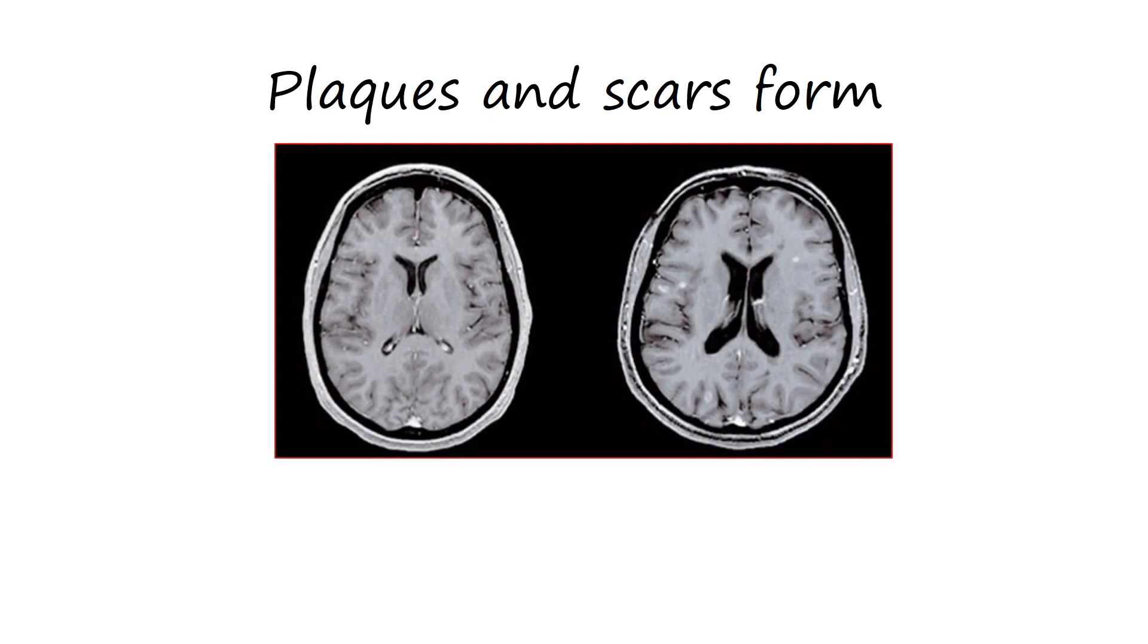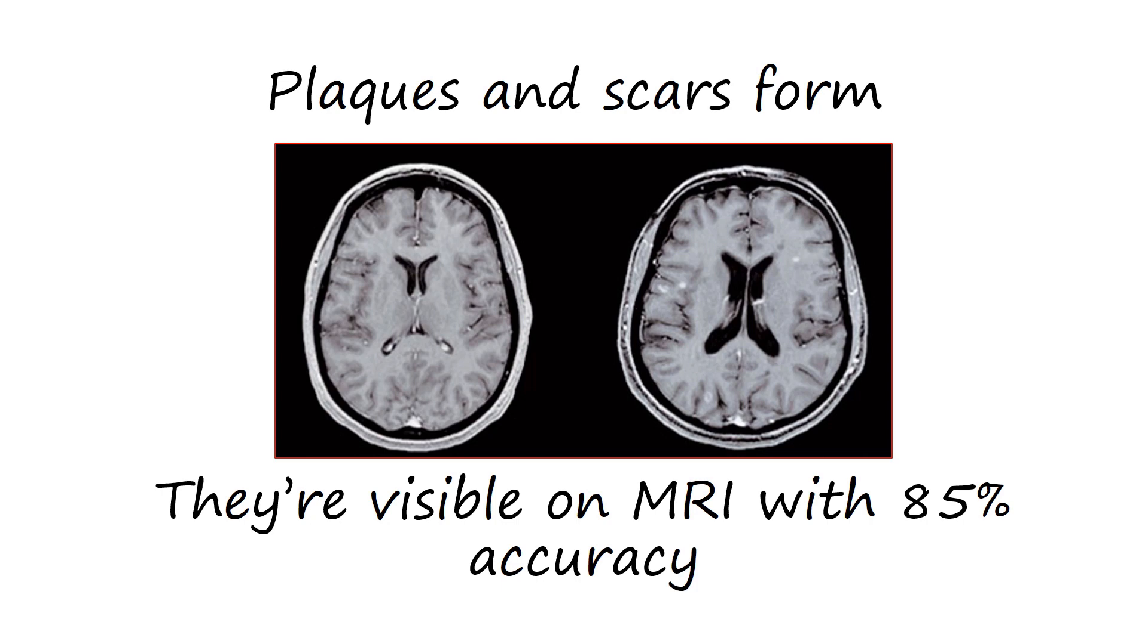The inflammation and damage to the myelin sheath leaves patients with multiple plaques or scars in their nerves. We are able to identify these with MRI scans, making this the definitive investigation with an accuracy of about 85%.